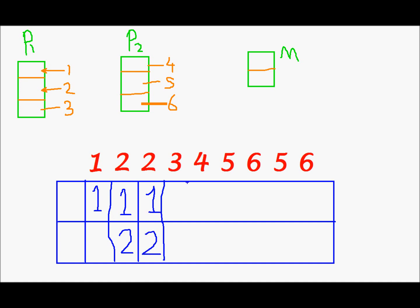Next I need to place page 3 in memory, so I'll have to remove one of these pages. Let's say I remove page 1 and place page 3 in place of page 1, while page 2 remains where it was. Next I need to place page 4, so I'll have to remove one of these again. I'll remove 2 and place 4 in place of 2.